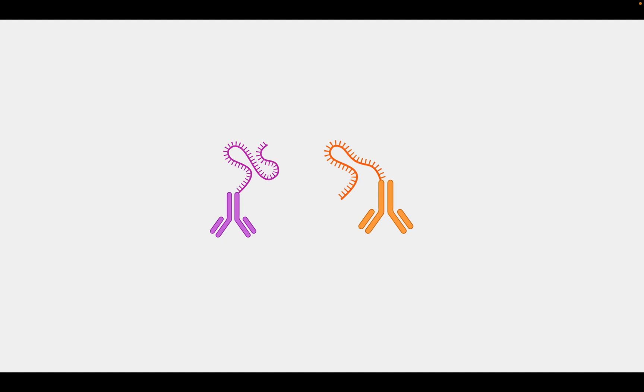One of the secondary antibodies is linked to the 3' end of the first PLA oligoprobe, and the other secondary antibody is conjugated to the 5' end of the second PLA probe.